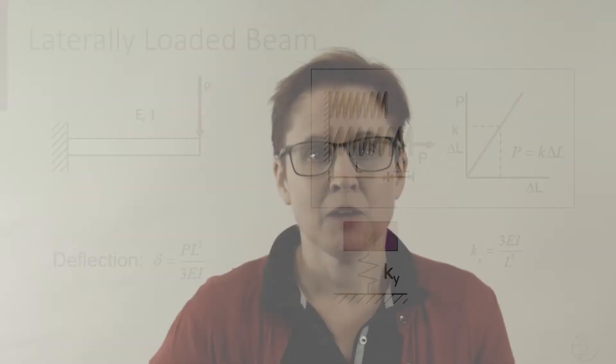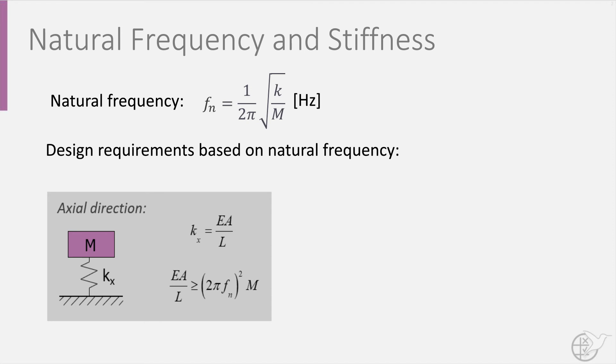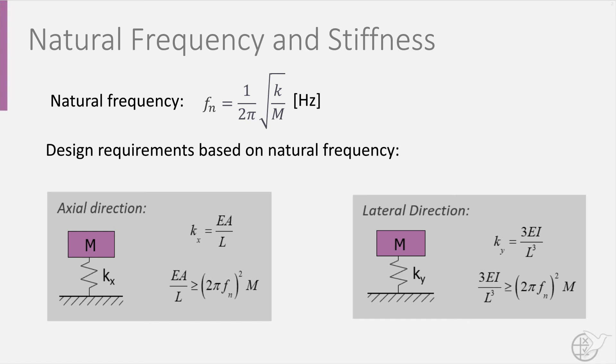If we now substitute the expressions found for the axial and lateral stiffness into the formula for the natural frequency, we find two design requirements. In the axial load direction, the stiffness kx must be larger than or equal to (2π × fn)² times the mass m. This allows us to size our spacecraft in terms of length, width, and thickness.